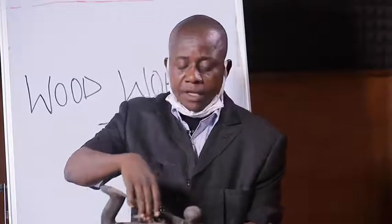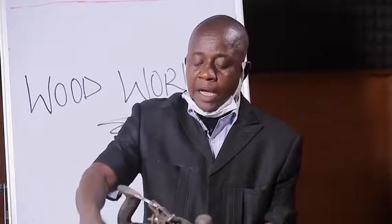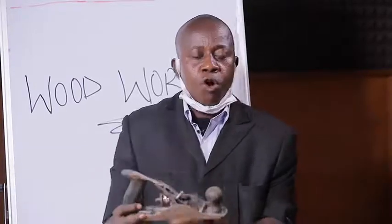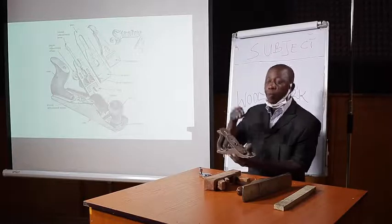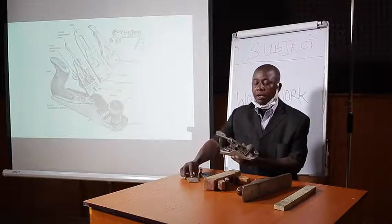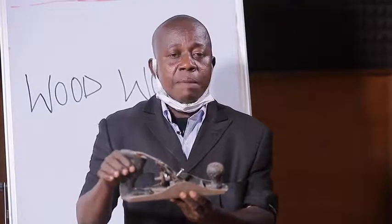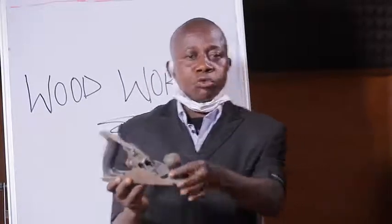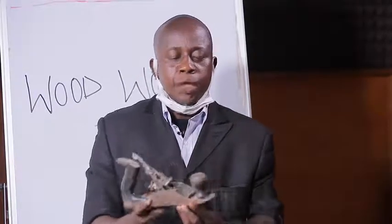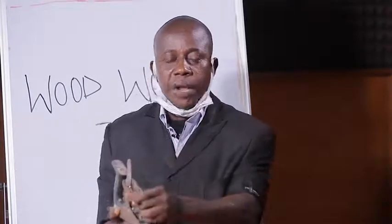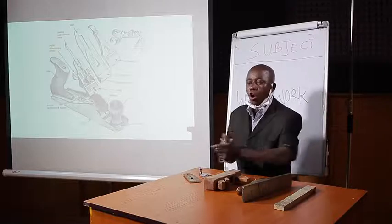The function of the frog or the bird is that it is on the frog that the cutting iron and the lever cap are mounted to form a perfect plane component, so that the purpose for which the plane is used will be performed very well. Next, we have the handle. We have the front handle and the rear handle. During the usage of the plane, the left hand grips the front handle while the right hand grips the rear handle before the operation is performed.